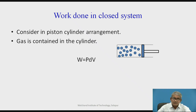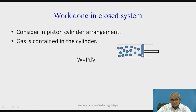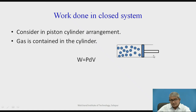Work is done in a closed system — the piston-cylinder arrangement. A piston and cylinder are there; in the cylinder, gas is placed. When you apply pressure, the volume is reduced from level 1 to level 2 — volume going from V1 to V2. Work done W equals P times (V2 minus V1) for the closed system, where pressure remains constant and is equal to the weight of the piston or whatever pressure is active.